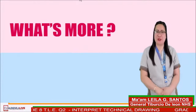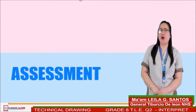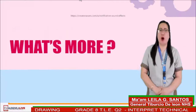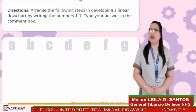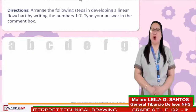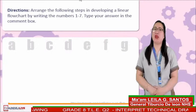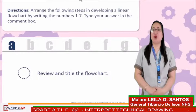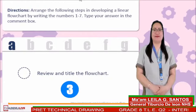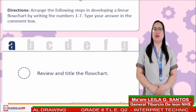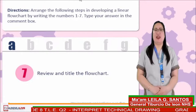We are done with our lesson for today. To assess your knowledge, let us answer the What's More and Assessment parts on your TLE module. With directions, arrange the following steps in developing a linear flowchart by writing numbers 1 to 7. We have only 5 seconds to answer every item. Let's start with number 1: Review and title the flowchart. Time's up — the correct answer is number seven.